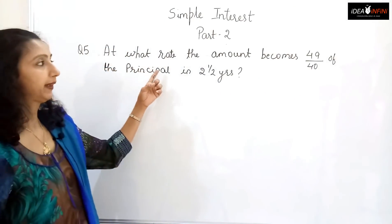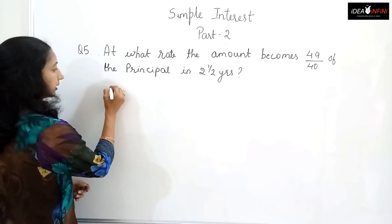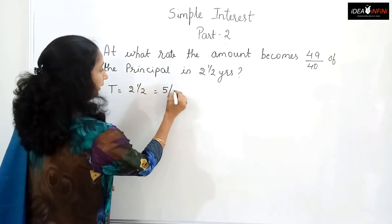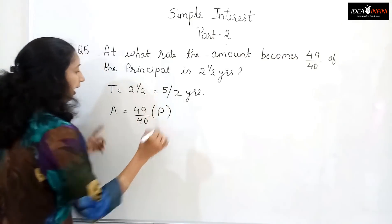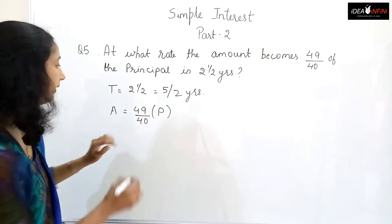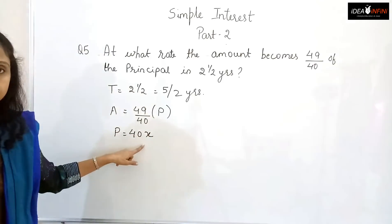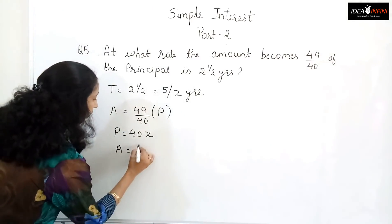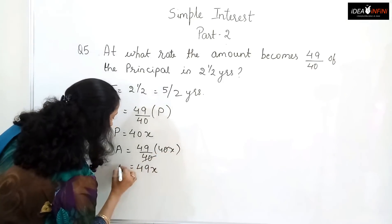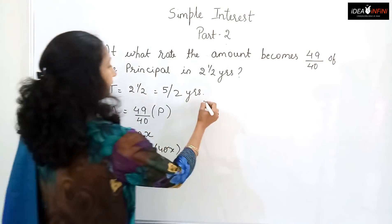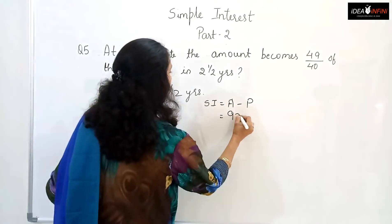Next example: at what rate does the amount become 49/40 of the principal in two and a half years (i.e., 5/2 years)? It is easier to take the principal as 40x. Then the amount = (49/40) × 40x = 49x. SI = Amount − Principal = 49x − 40x = 9x. So when the amount is 49/40 of the principal, the simple interest equals 9x.